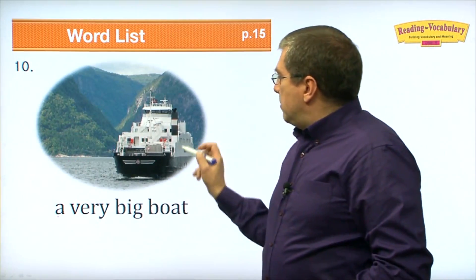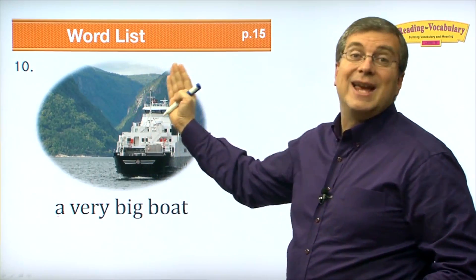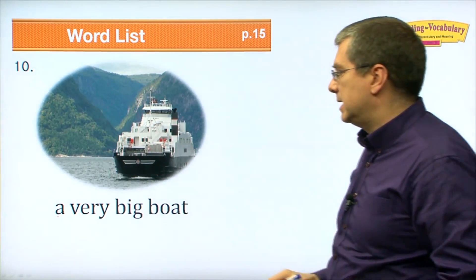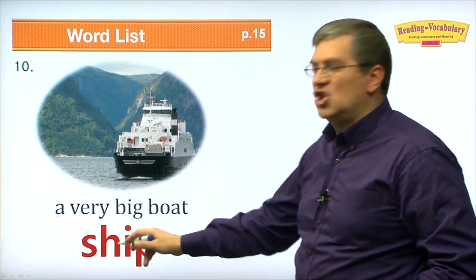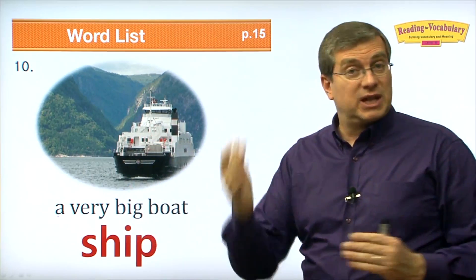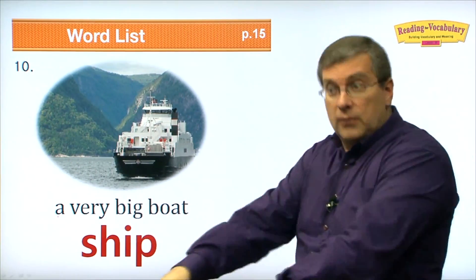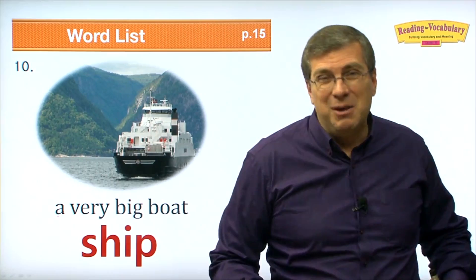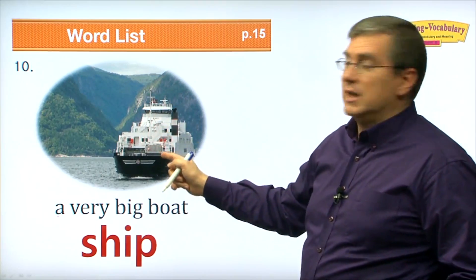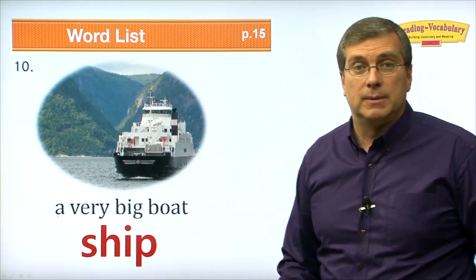Number ten. A very big boat — huge boat using an engine. What do we call this big boat? We call it a ship. A ship is a very big boat. Ships can have engines or they can also have sails. If you're in a small rowboat going across a river, you're not in a ship. But if you're on a really big boat with many rooms that can carry a lot of people or things, then that is a ship.